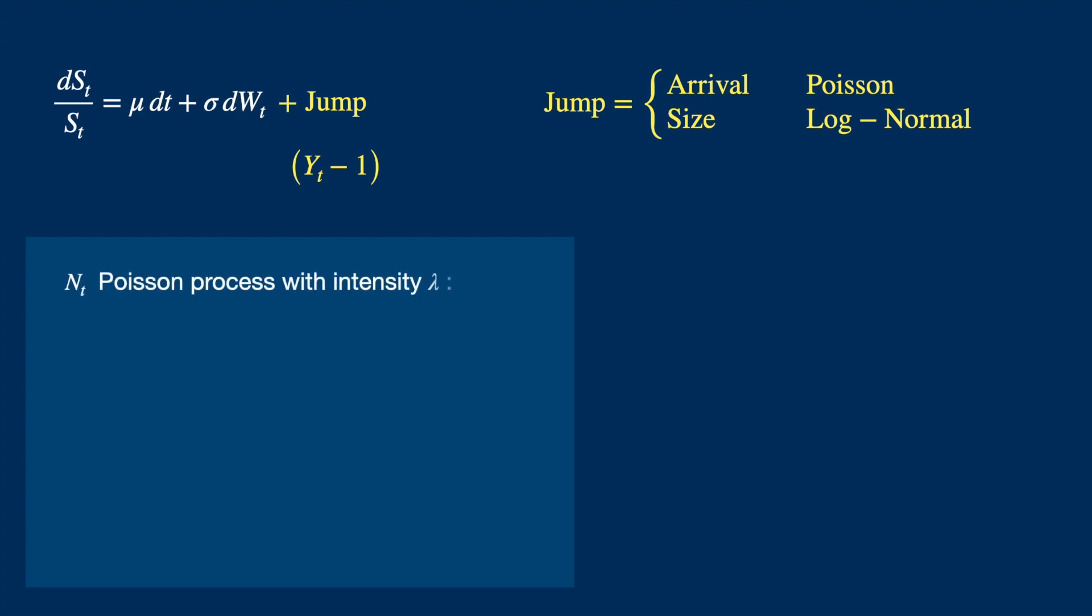Poisson process with intensity lambda is a process, which starts at 0, and has independent increments. And the probability of one jump over a small interval is lambda times delta t. And the probability of more than one jump over a small interval is negligible, O of delta t to be precise.